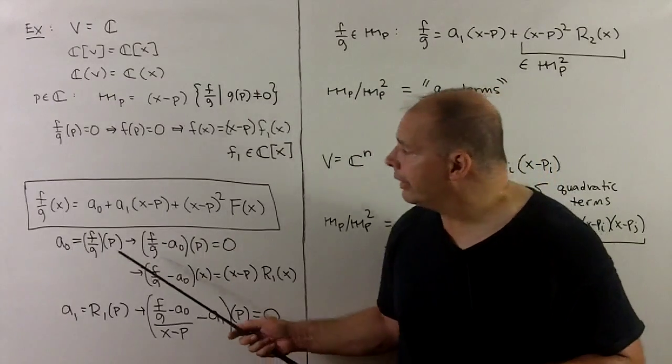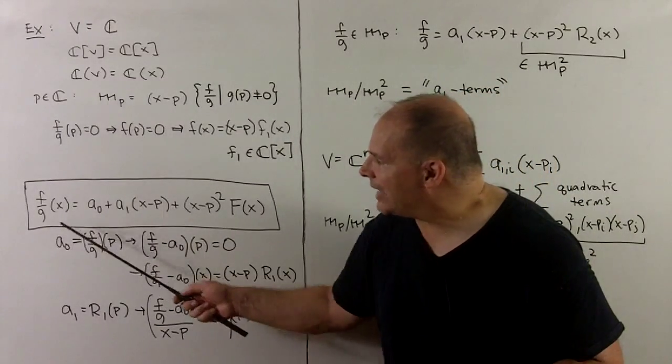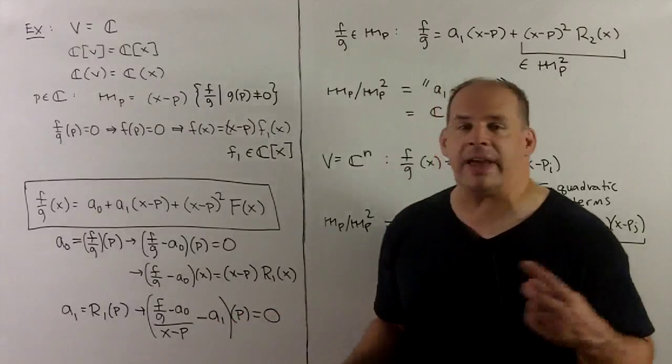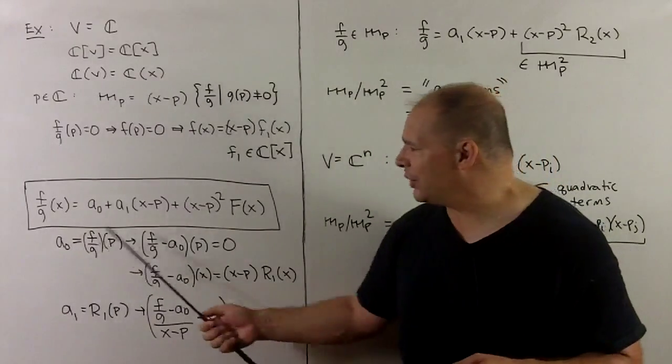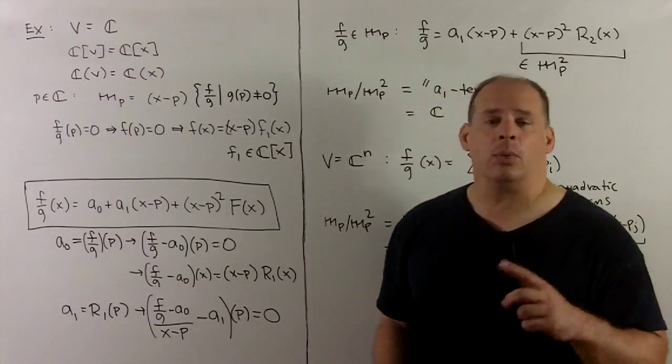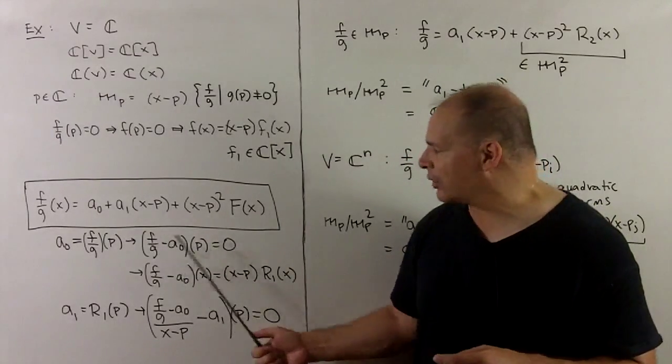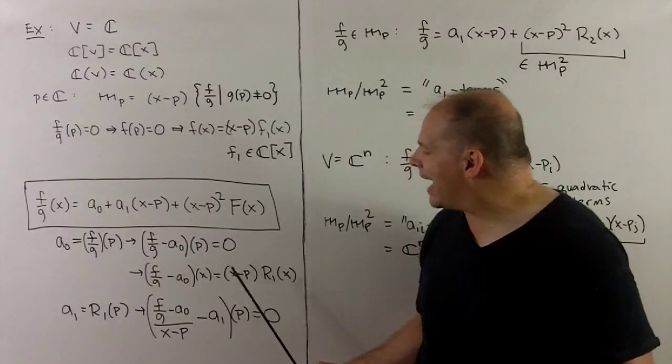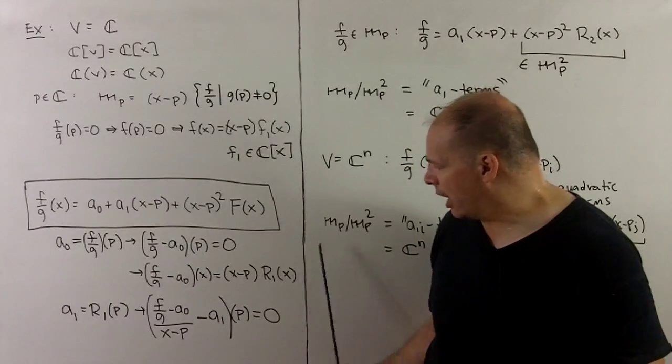To see this, I'll let a₀ = F/G evaluated at P. If we subtract off a₀ from F/G and evaluate at P, we get zero, which means we have to have (X - P) as a factor. We can write that as (X - P) times another element of the local ring. We repeat: let a₁ = R₁(P). Now we take F/G - a₀, divide by (X - P), subtract off a₁—that's another element of our local ring.